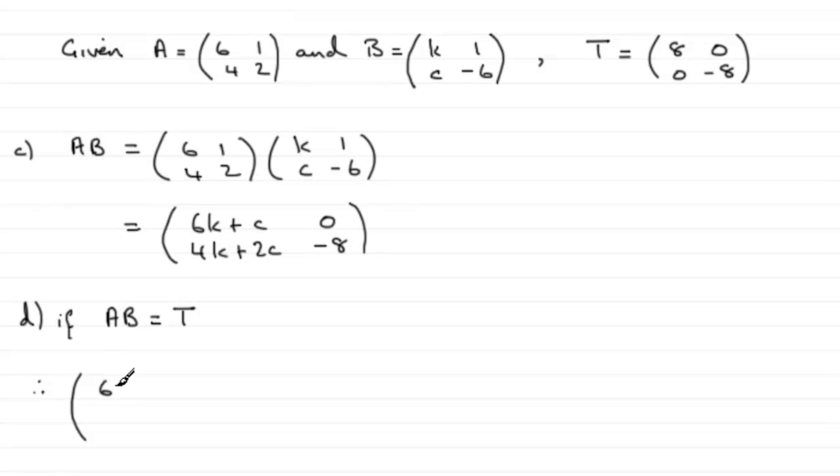So we would therefore have that the matrix for AB, 6K plus C, 0, 4K plus 2C, and minus 8, must be identical to the matrix T which we know is 8, 0, 0, minus 8.